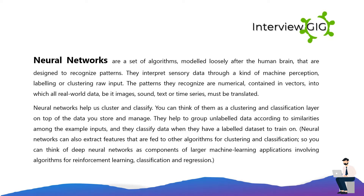Neural networks help us cluster and classify. You can think of them as a clustering and classification layer on top of the data you store and manage. They help to group and label data according to similarities among example inputs, and they classify data when they have a labeled dataset to train on. Neural networks can also extract features fed to other algorithms, so deep neural networks can be components of larger machine learning applications involving reinforcement learning, classification, and regression.